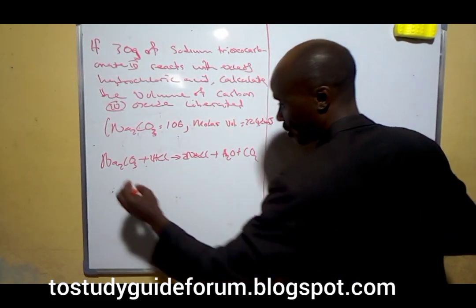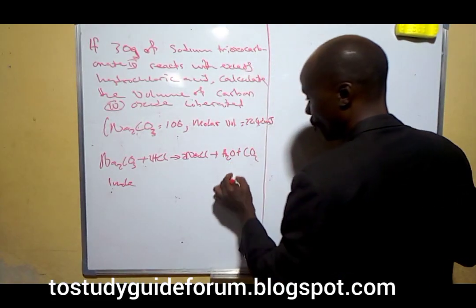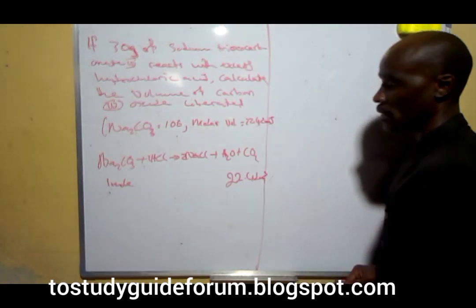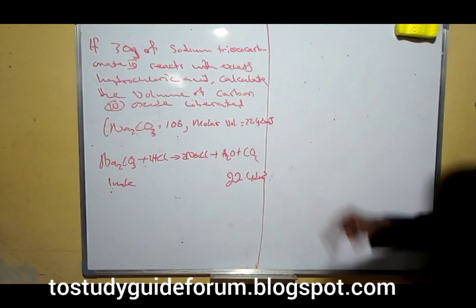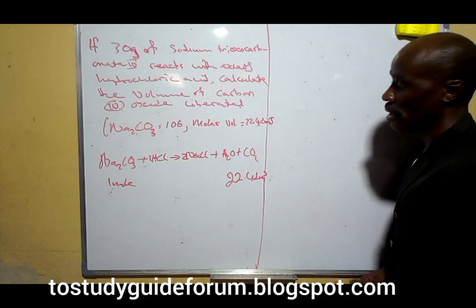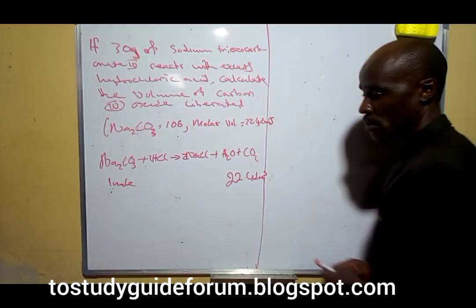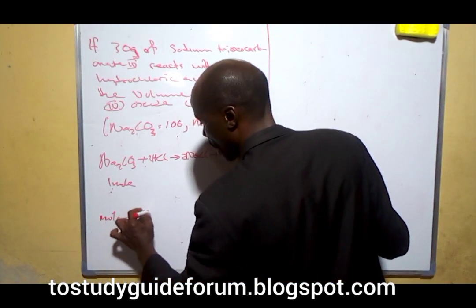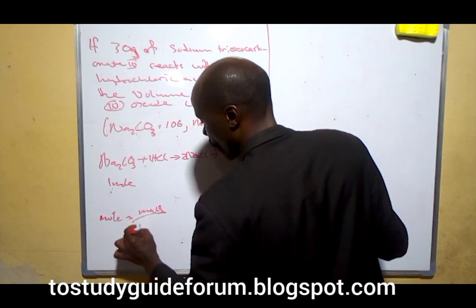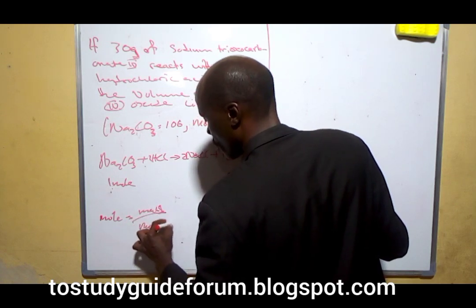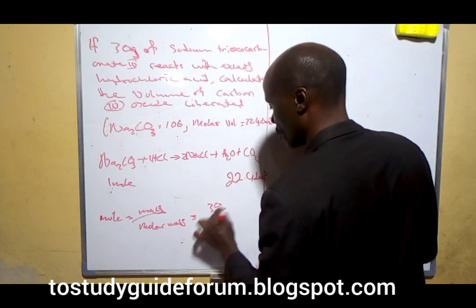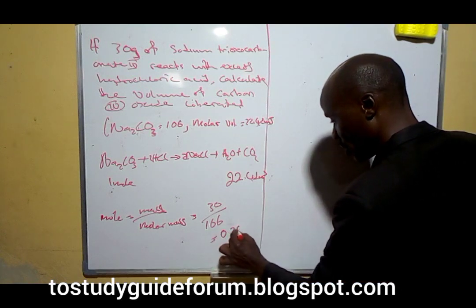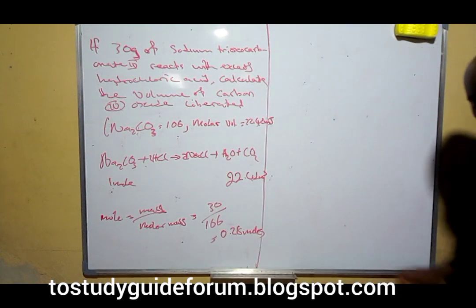From this chemical equation, we find that one mole of sodium carbonate produces 22.4 dm³ of carbon dioxide at STP. The first thing we do is convert the given mass to moles: moles = mass over molar mass, that is 30 over the molar mass of sodium carbonate, which gives us 0.28 moles.